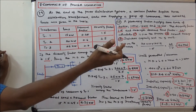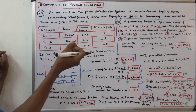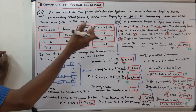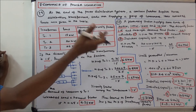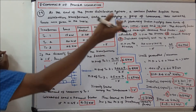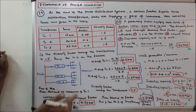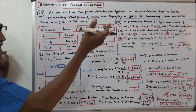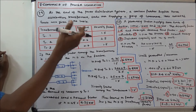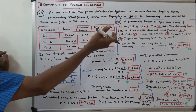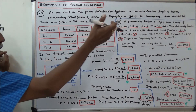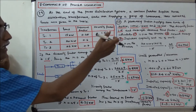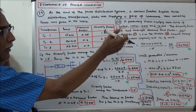Second problem: a generating station supplies peak loads of 20 megawatts, 10 megawatts, 16 megawatts, and 14 megawatts. The diversity factor is 1.5 and the average load factor is 60%. Calculate: (1) maximum demand on the station, (2) annual energy generated by the station, and (3) installed capacity and number of units.